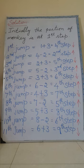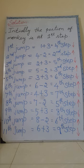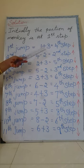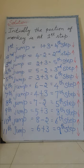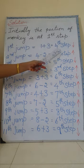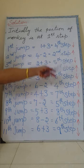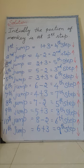He is positioned at the first step. So the first jump: starting from first step, three jumps down brings him to the fourth step. Now the position after the first jump is the fourth step. The signs are downwards, so he jumped three steps downwards.